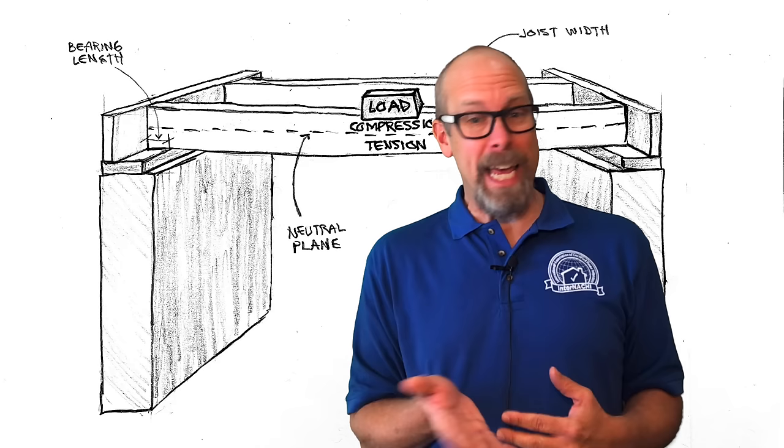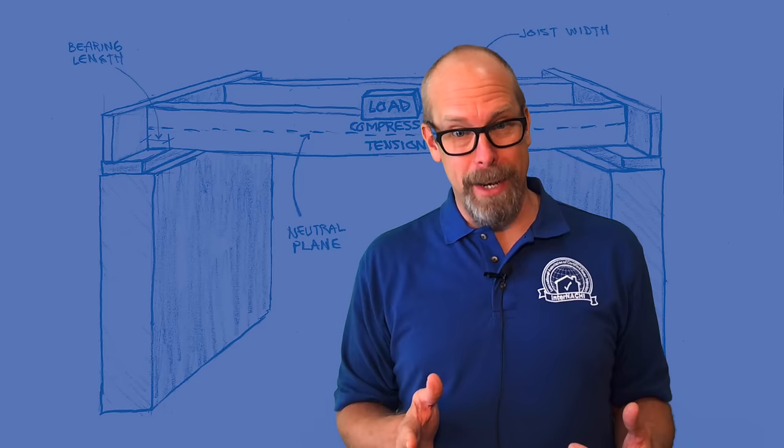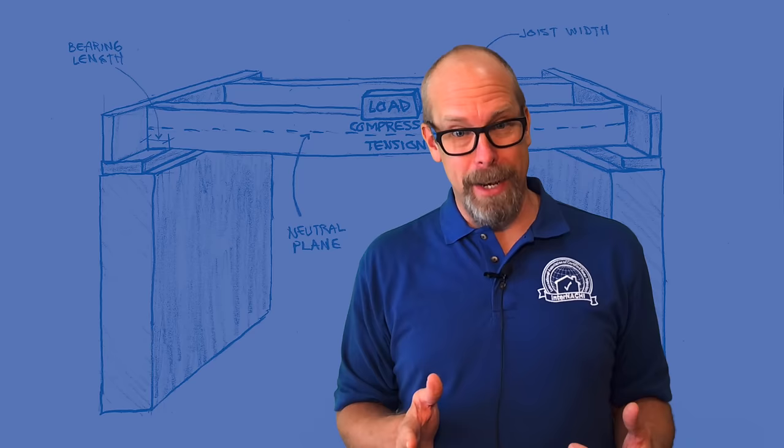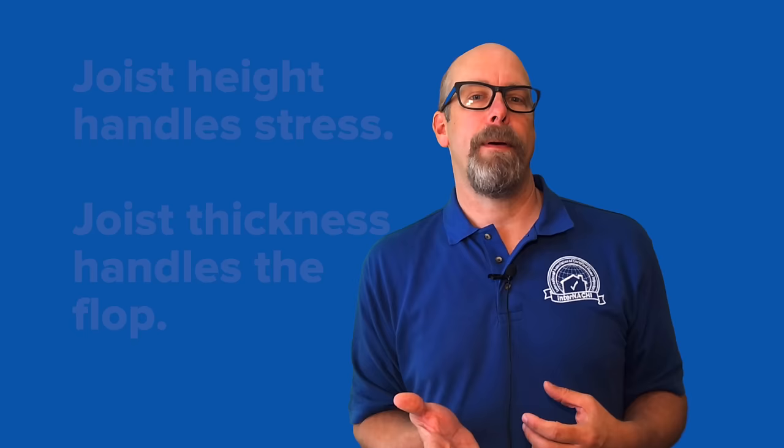Joists will lay down on the job if permitted to, and a joist laid flat, like decking, can't span very far without bending along its thickness. Given the way houses are built, that isn't what happens. Instead, joists, especially when overspanned or overloaded, try to flop over in the middle of the span. Joist thickness is a large part of what prevents this kind of flop. While the height handles the stress, the thickness of the joist helps keep it upright and handles the stress.